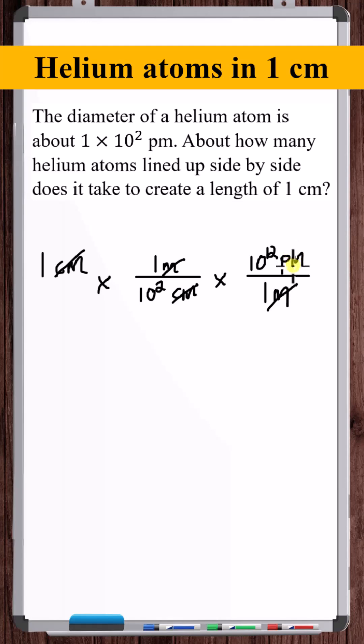We're trying to find the number of helium atoms. How is the helium atom related to the picometer? Well, you've got 10 to the second picometers for every 1 helium atom.